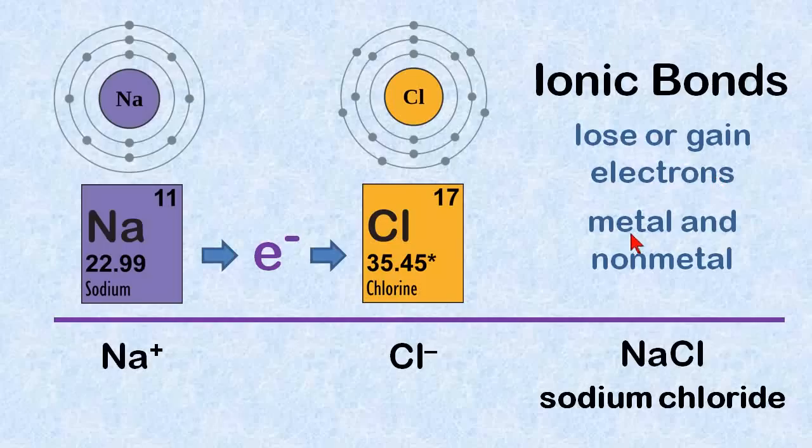An ionic bond is just a loss or gain of electrons, and it happens between a metal and a non-metal. It forms NaCl, which is sodium chloride. These ionic bonds are kind of like glue. It's an electrical attraction. They're held together by a strong electrical attraction. Positive, negative, and it's the glue that holds the molecule together.